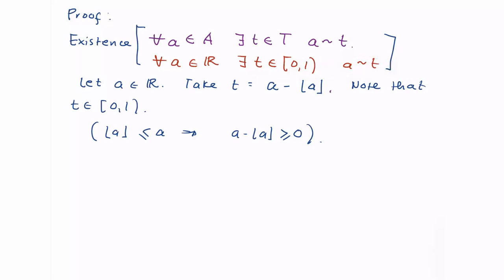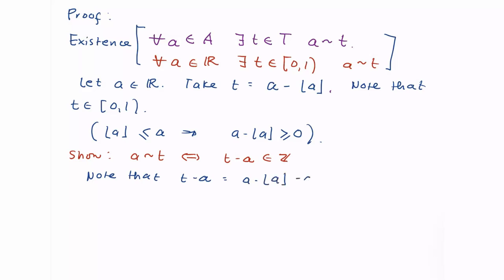To show that a is related to T, we need to show that T minus a is an integer. Note that T minus a equals (a − ⌊a⌋) minus a, which equals negative the greatest integer of a, and that is definitely an integer. Therefore, a is related to T. This completes the existence part.